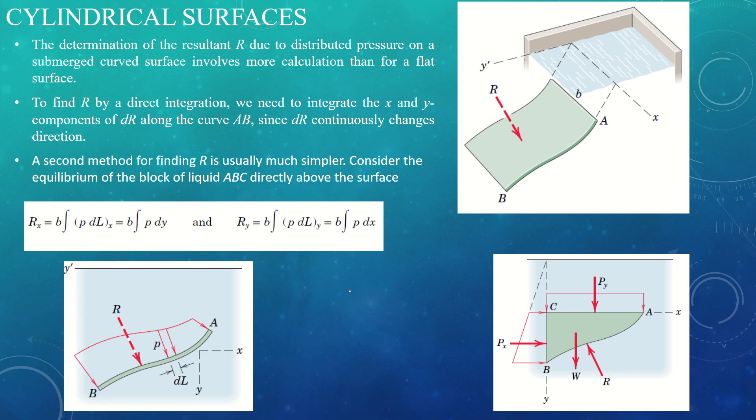We are going to now talk about hydrostatic pressures on cylindrical surfaces. It's the same approach as we have done for rectangular surfaces. Now the surface is more curved rather than taking the area. Now we have a component of area, same surface of width B. But the area now becomes very small to DL.